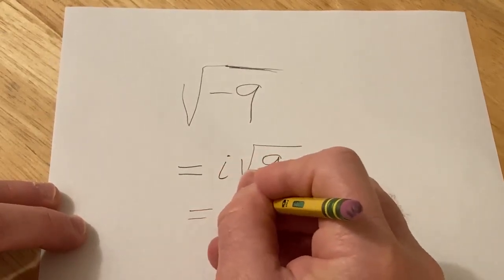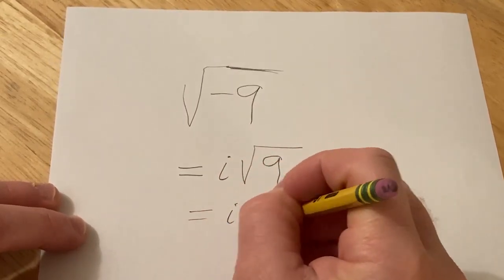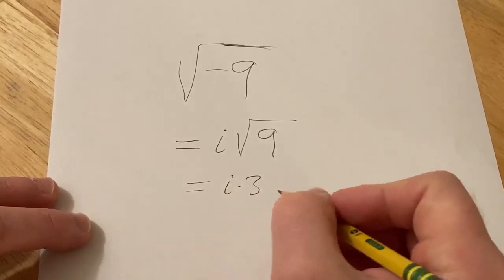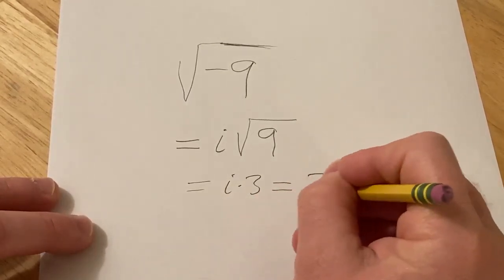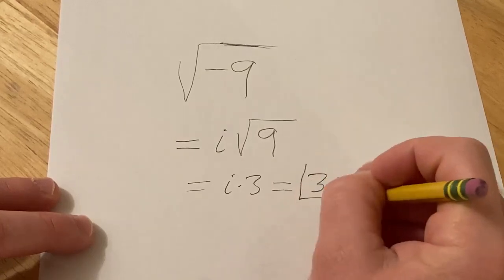This is equal to i, and the square root of 9 is 3. So it's written as i times 3, which is kind of weird. Typically people write that as 3i, and you write the i at the end.